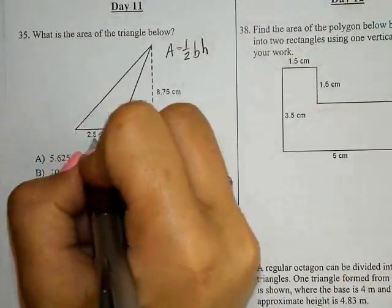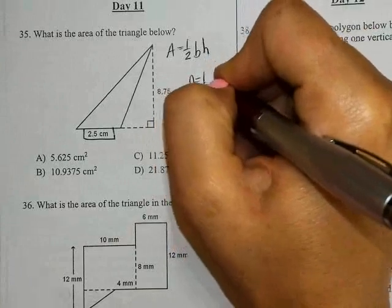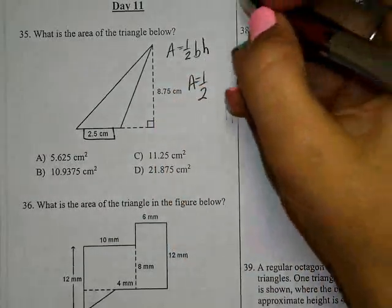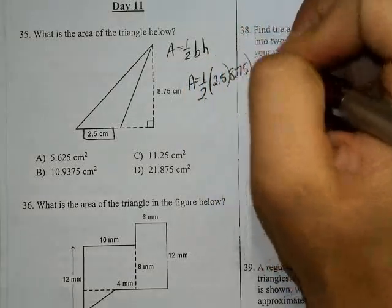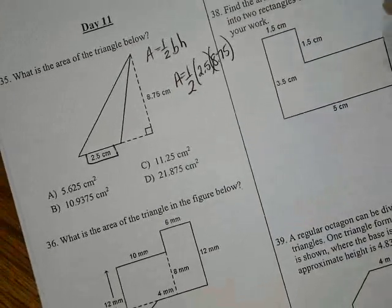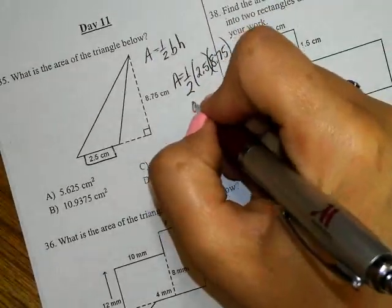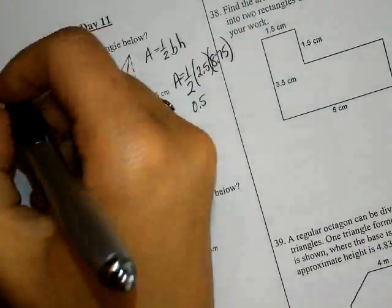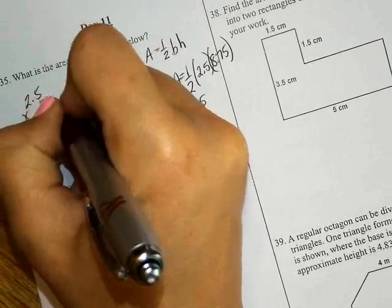The base of the triangle is represented by 2.5. So you have one-half times 2.5 times 8.75. Now, when you multiply the two out, one-half as a decimal is 0.5. So you come to the side and you say 2.5 times 0.5.